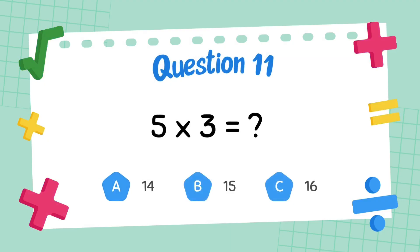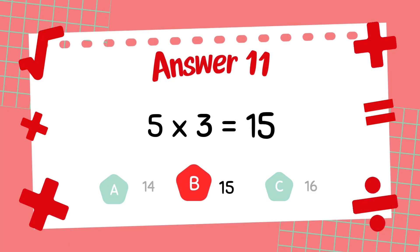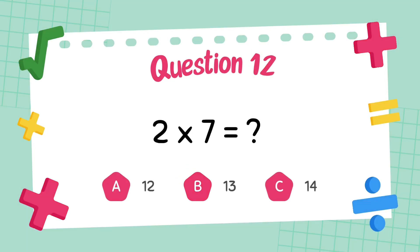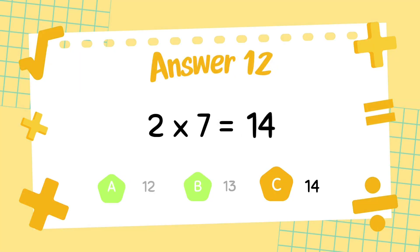What is 5 multiply 3? The answer is 3. What is 2 multiply 7? The answer is 14.